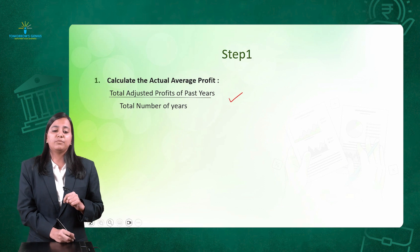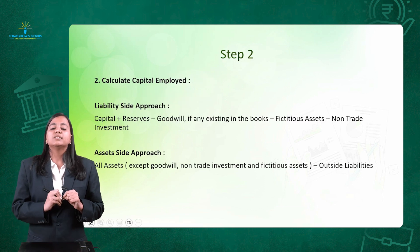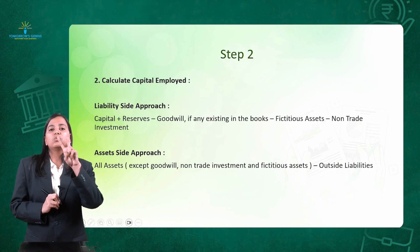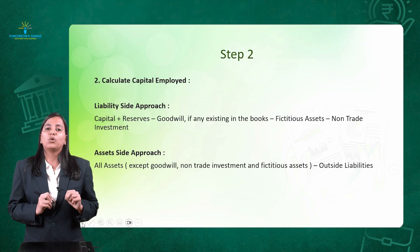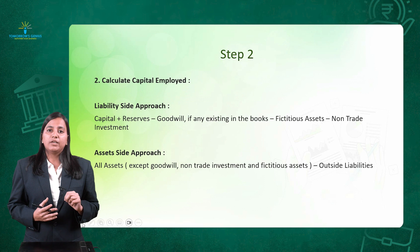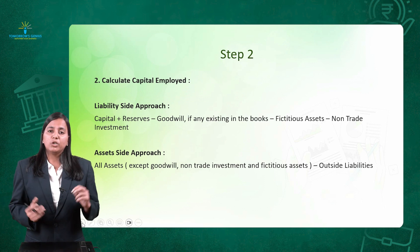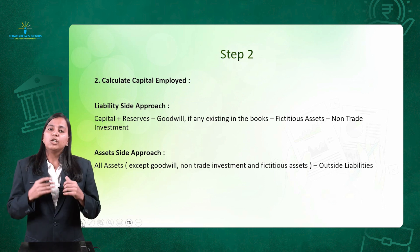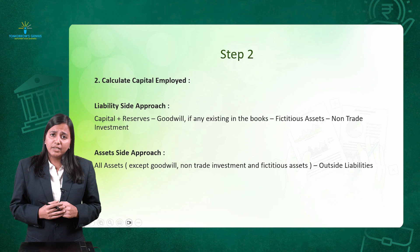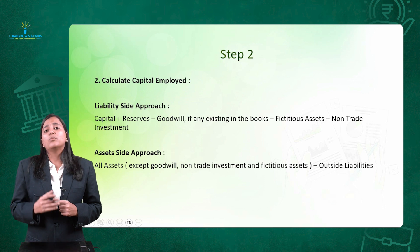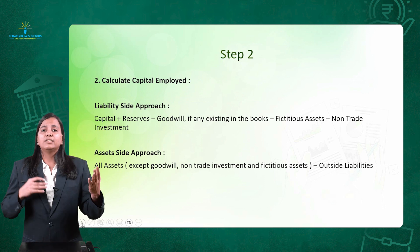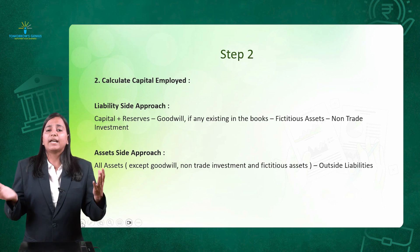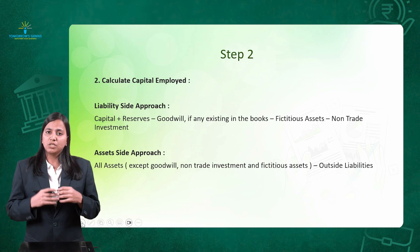Step number 2 is capital employed — the money invested in the business. You can calculate it using the liability side approach or the asset side approach. Sometimes it is given to you directly in the question.